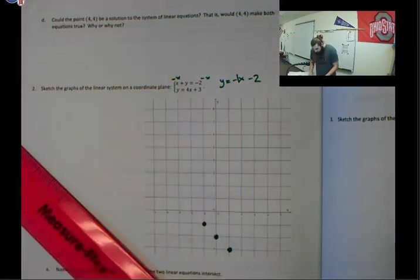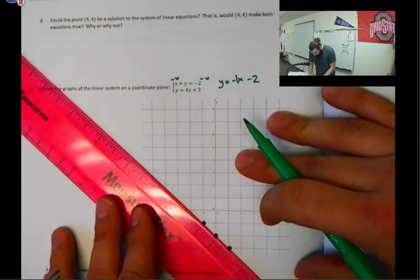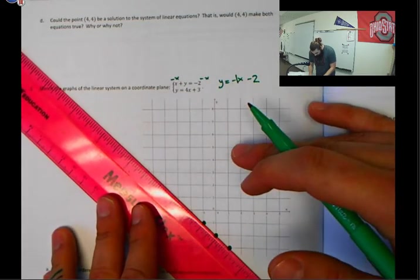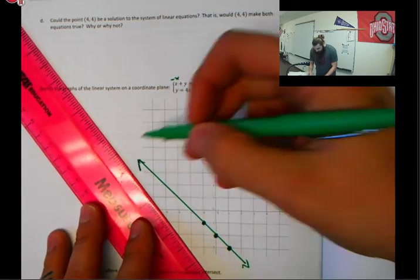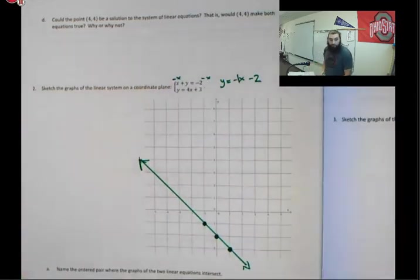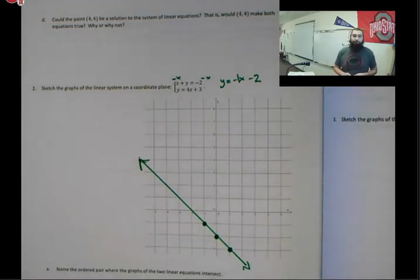So we got three different points here. We're going to connect them and then extend them as well. So using your straight edge, draw a line through those points on your coordinate plane. Okay, that's it. That's one line.